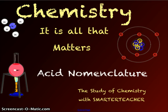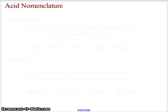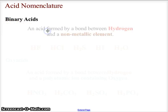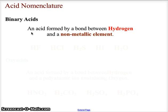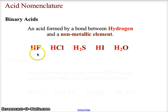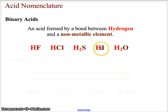Hello and welcome back to Chemistry: It Is All That Matters. Today we're going to look at acid nomenclature — how we name acids. We're going to look at two basic forms of acids. The first form are the binary acids, which are acids formed between a hydrogen bonded to a nonmetallic element. Examples include HF, HCl, H2S, HI, and H2O, where hydrogen is the leading element followed by a nonmetal.